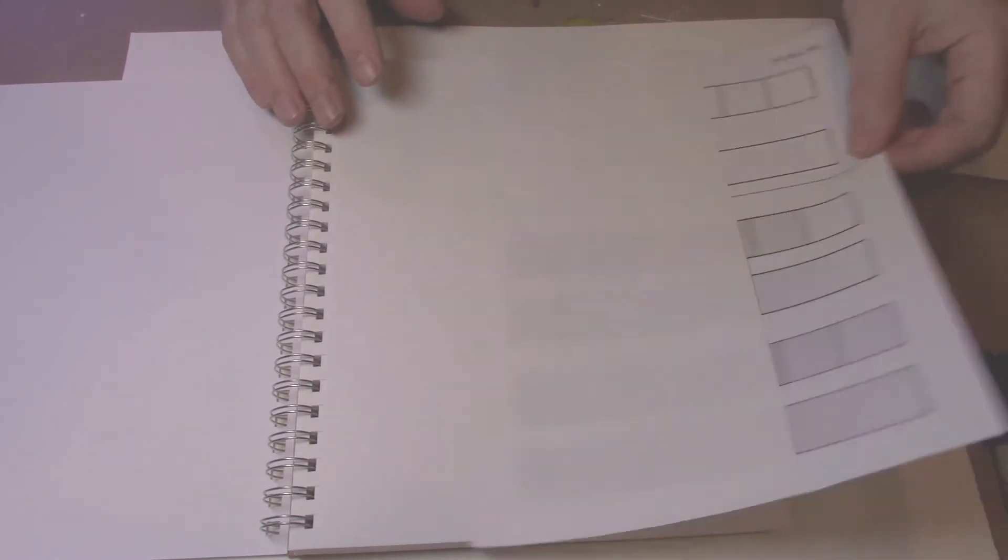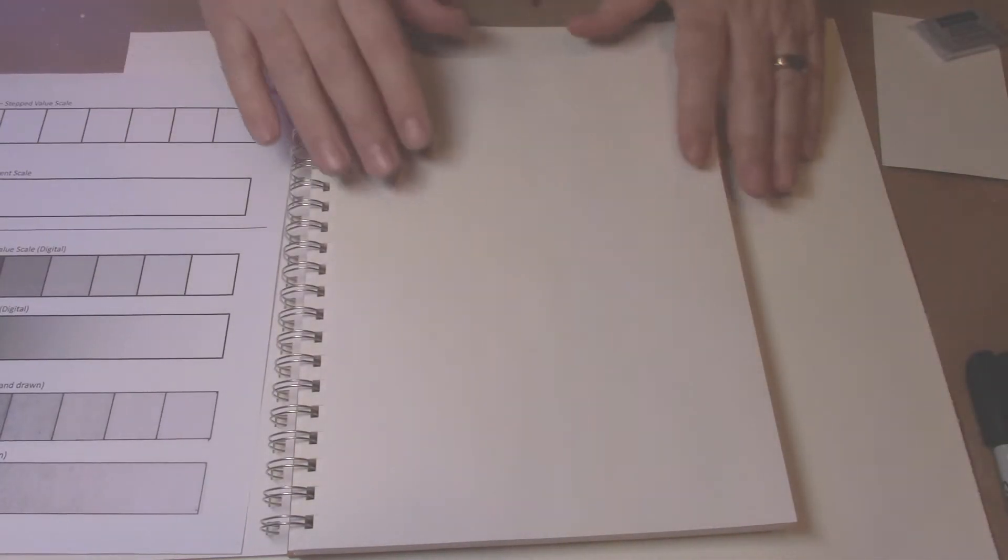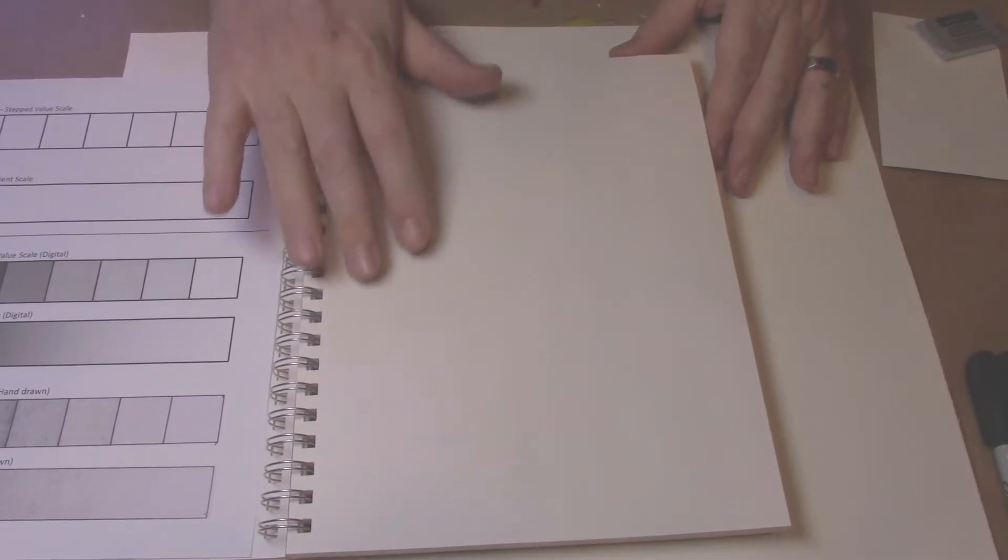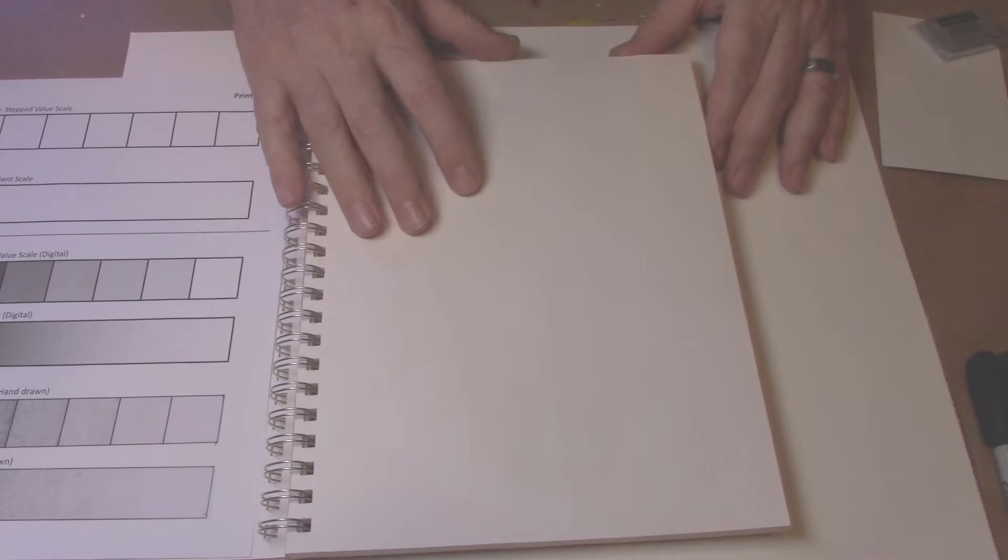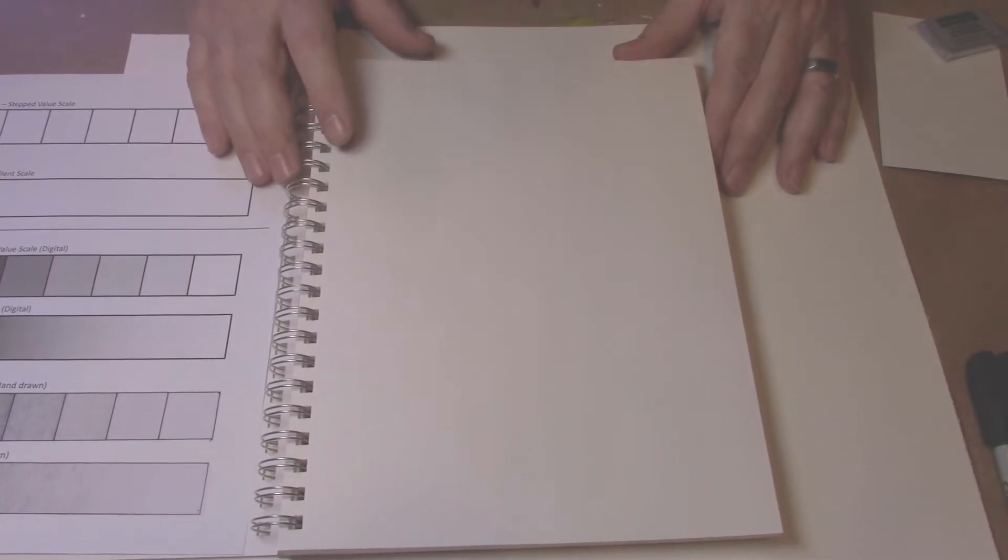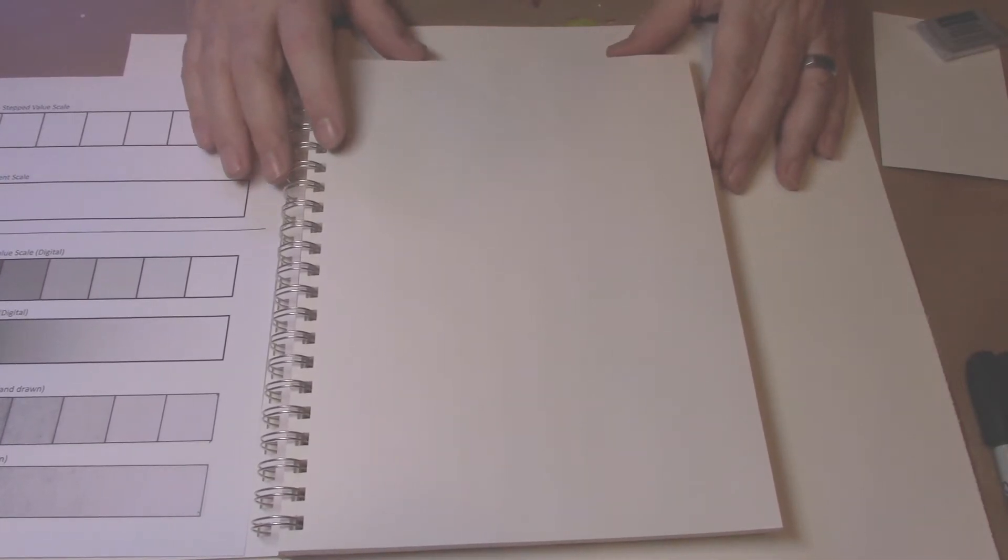The reason you have to use a sketchbook is the paper quality is a little bit better. It's about twice as thick as photocopy paper. Also there is a bit of a surface to the paper for the graphite to hold onto. That's called tooth. So again, this is probably the most expensive purchase for this course.